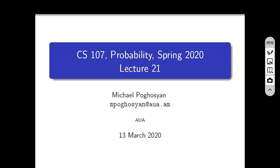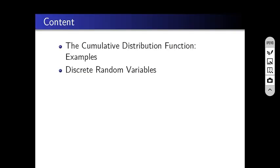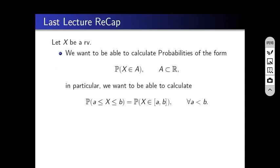Hello everybody, this is Mikhail Porosyan from AUA and this is my first online lecture on probability. This is the 21st lecture from last Friday, 13th March, which we missed. Today we're going to talk about cumulative distribution functions and discrete random variables. Last time we were talking about CDF and random variables, and we gave some properties of CDFs.